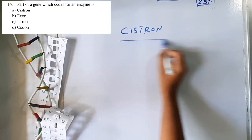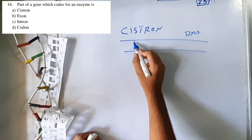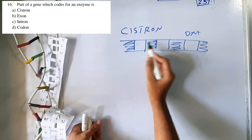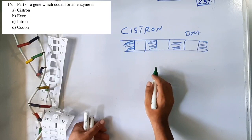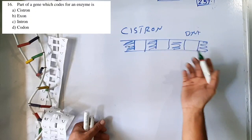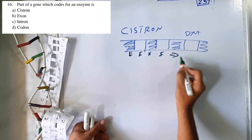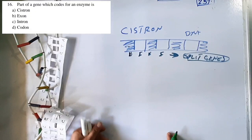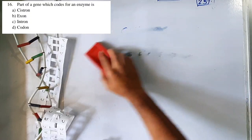Question 16: The part of a gene which codes for an enzyme is a cistron. In eukaryotic DNA, there are expressed sequences (exons) and non-expressed sequences (introns). Introns are removed by splicing. Because eukaryotic genes contain both exons and introns, they are also called split genes. The part coding for protein/enzyme is the cistron. Option A — cistron — is correct.